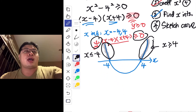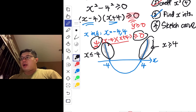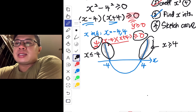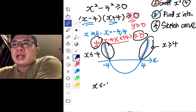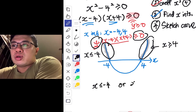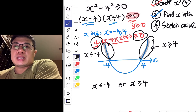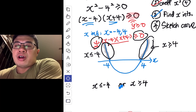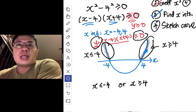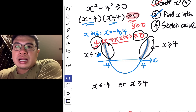The final answer is x less than or equal to negative 4, or x greater than or equal to 4. Take note: this is not an 'and' — you cannot have answers that fulfill both inequalities at the same time. It must be an 'or'.